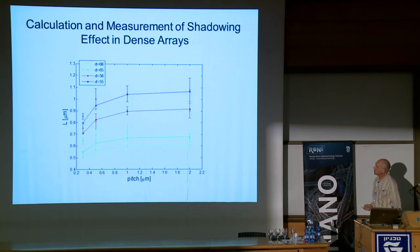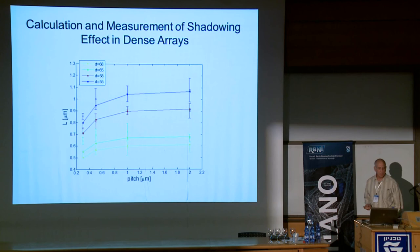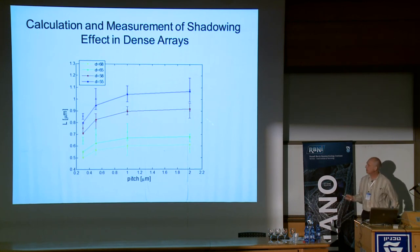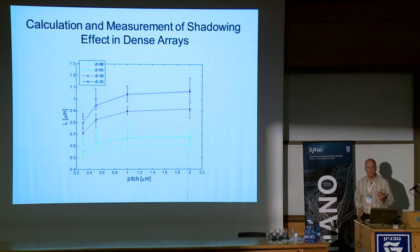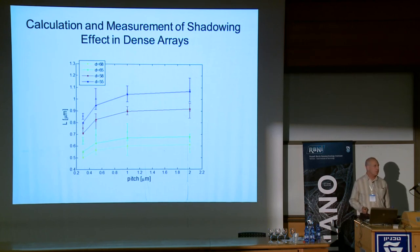I want to show this slide to explain that the selective area VLS method is highly controlled. The main point is we understand and can actually predict the growth rate. Here we predict the growth rate as a function of the pitch in dense arrays of nanowires. The growth rate varies simply because there is mutual shading, and we can calculate the shading. The actual growth rate we're getting fits very well with the calculation of the shading - with no free parameters we can predict the growth rate of nanowires, which was a task we never succeeded at before.